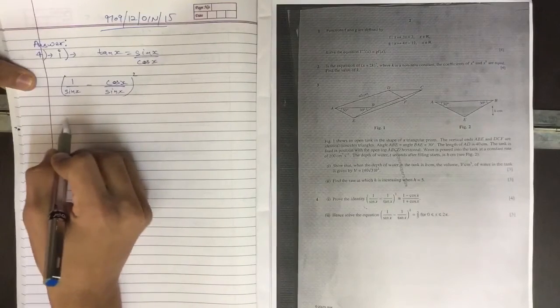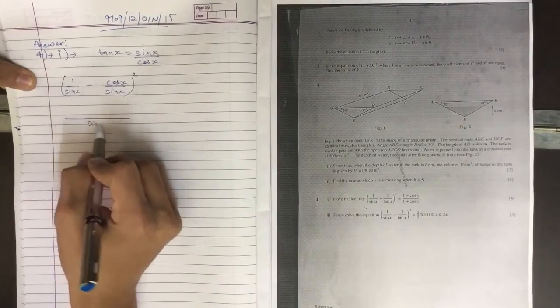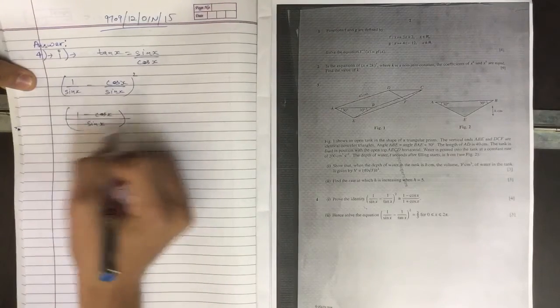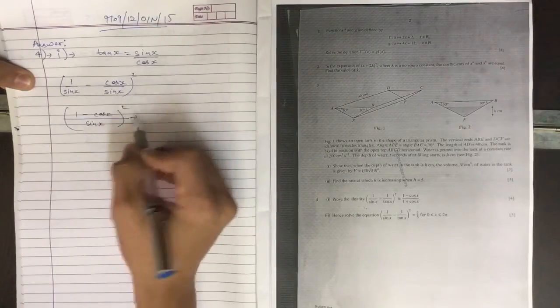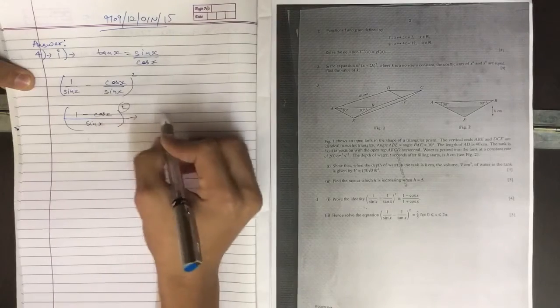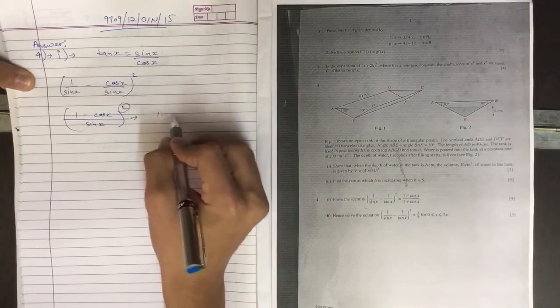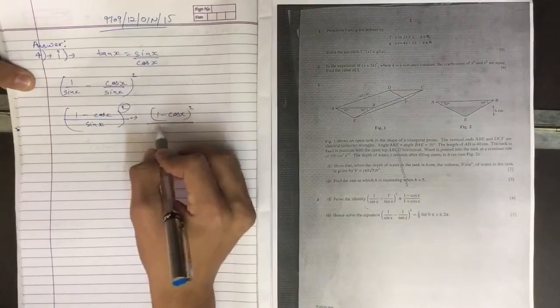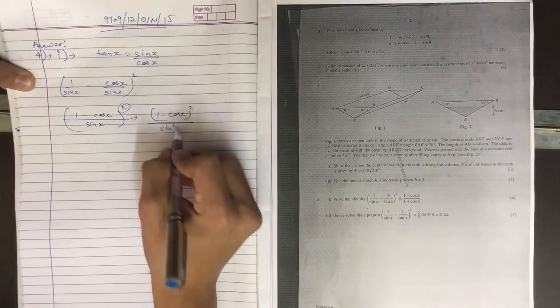Now we need to take the LCM of these two and we get (1 minus cos x) to the whole squared. The next step we need to apply the squared into the equation and we get (1 minus cos x) squared upon sin squared x.